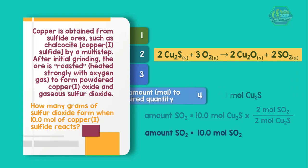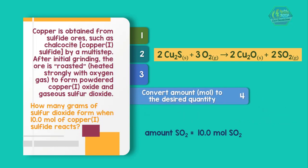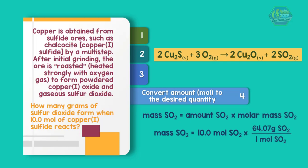We then convert the amount in moles to the desired quantity, which is mass. So 10 moles SO2 times 64.1 grams per mole equals 641 grams of sulfur dioxide formed when 10 moles of copper sulfide reacts.